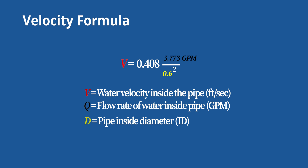Simply plug those into the appropriate places and solve the formula, and you have your velocity in feet per second. If you prefer to skip the math, Washington State University has a handy velocity calculator you can use by inputting those same variables. Their calculator uses the exact same formula — we'll put the link in the video description right after the formula.